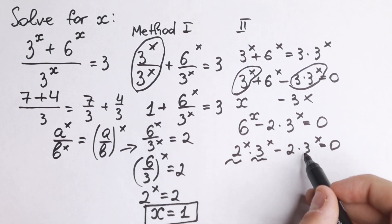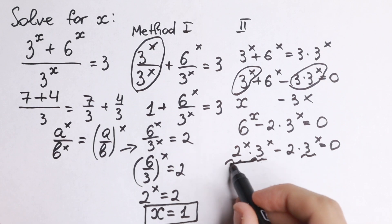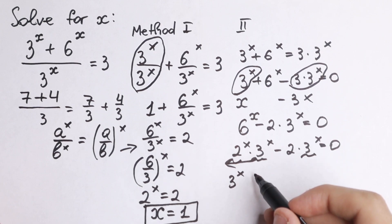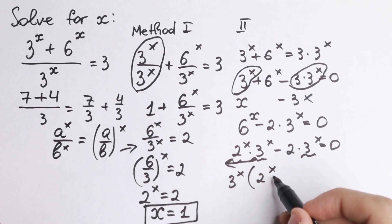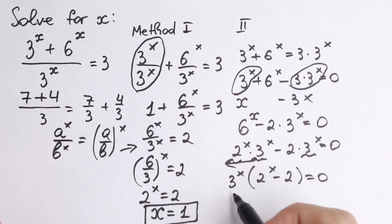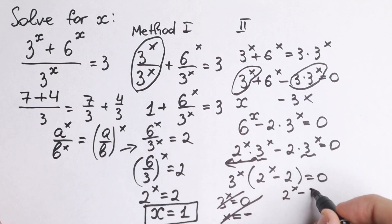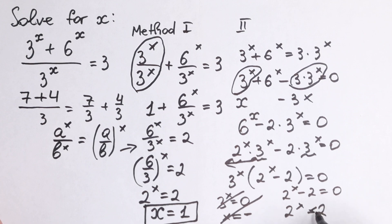3 to the x and 3 to the x is the common factor, so we can factor it out. We will have 3 to the x times (2 to the x minus 2) equal to 0. We can easily solve it. 3 to the x equal to 0 has no real roots, so this case is not good for us. And this part is 2 to the x minus 2 equal to 0, which is the same as before. 2 to the x equal to 2, and x equal to 1.